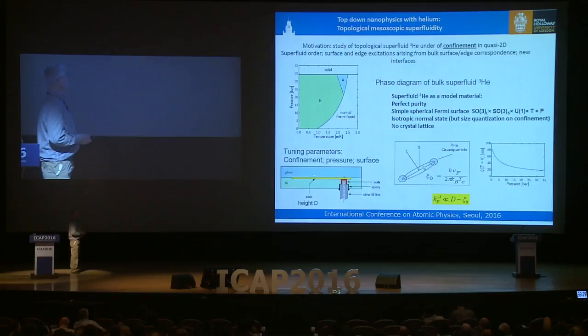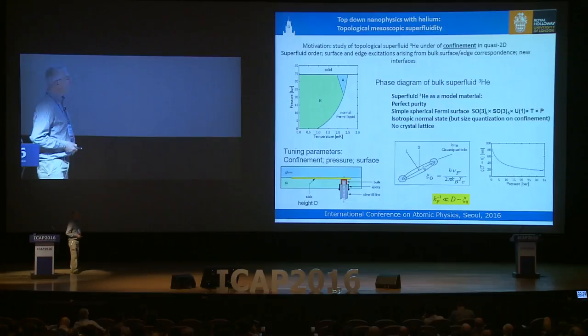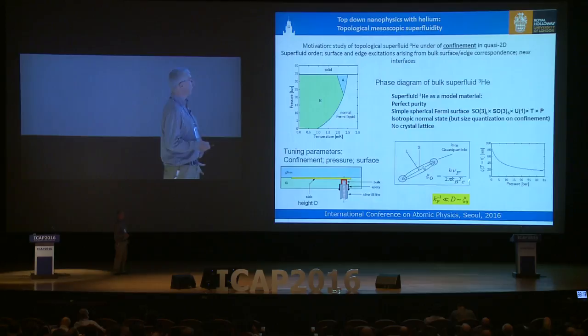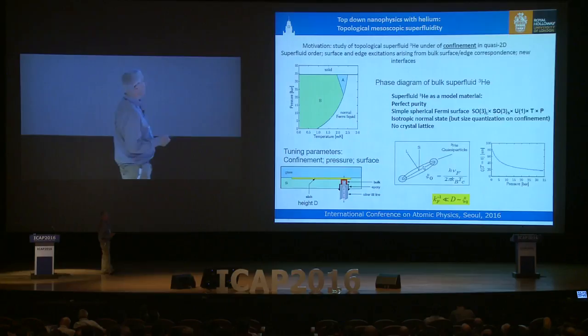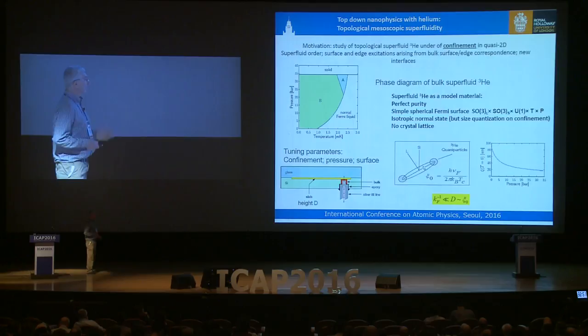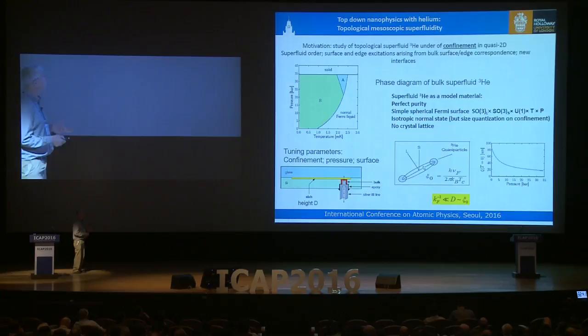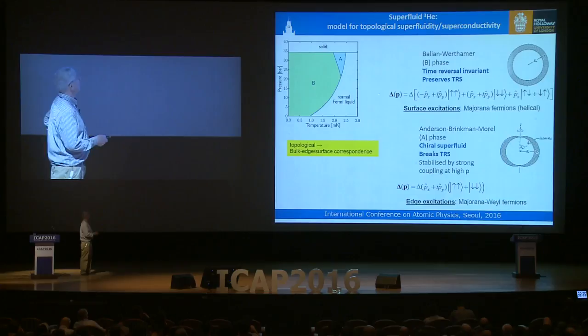We want to take superfluid helium-3 and confine it into a cavity formed through a nanofluidic structure. The typical height D that we've been studying spans a relevant range. The length scale characterizing the important range is the coherence length — the size of the Cooper pair at T equals zero — given by a set of parameters which are functions of pressure. The coherence length goes from about 80 nanometers at zero pressure to about 20 nanometers at the melting curve. So for a fixed cavity height, by tuning the pressure we tune the effective confinement — though these thicknesses are much larger than the inverse Fermi wavelength, so it's really only quasi-two-dimensional.